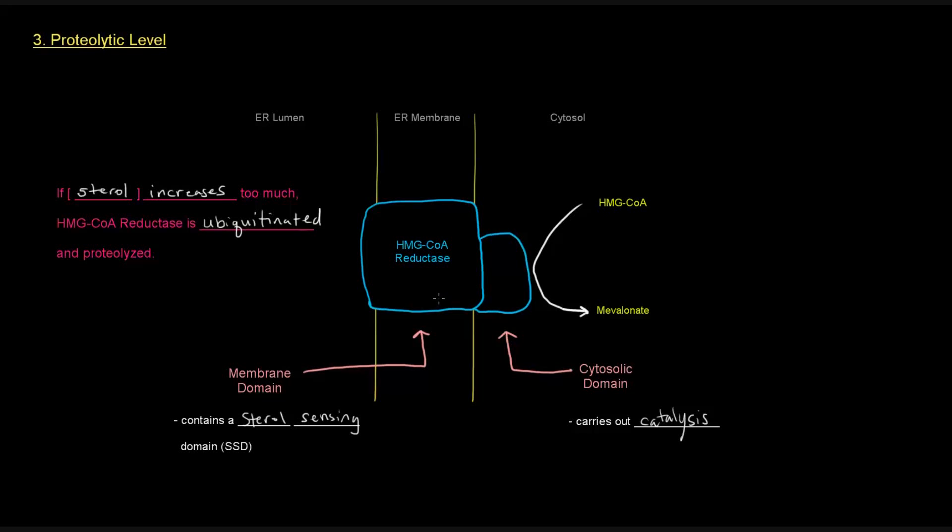So those are three different levels of control long-term that determine whether or not this reductase is even available for catalytic activity. So I hope that video was helpful in summarizing the long-term control. Thank you for watching. Thanks for watching, and be sure to like, comment, subscribe, and share the video with anyone who you think might find it helpful. Thanks, and happy studying.